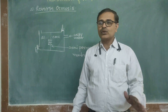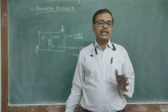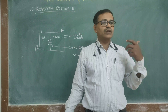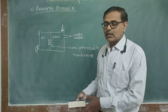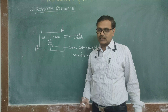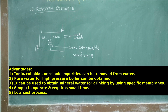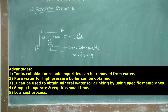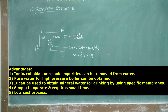We can use reverse osmosis for any industrial or drinking application. But for drinking application, the membrane needs to be modified. The advantages are: pure water for high-pressure boilers can be obtained, since high-pressure boilers require very highly pure water. It can also be used to obtain mineral water for drinking purpose by use of specific membranes. This process is simple to operate, requires small time, and the operating cost is also less.